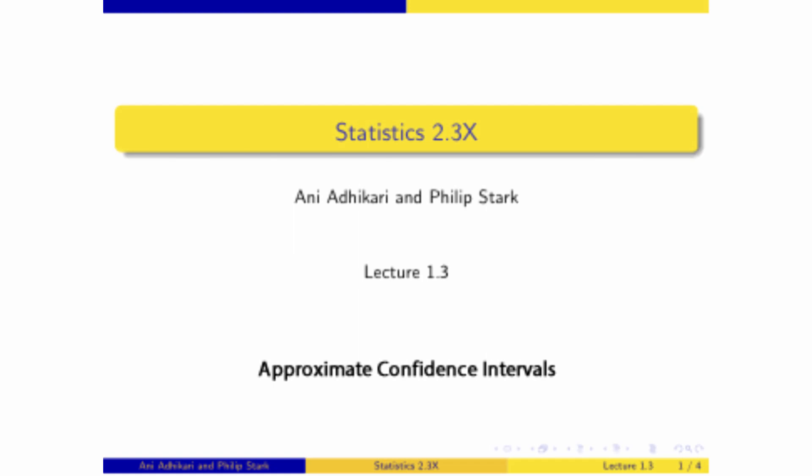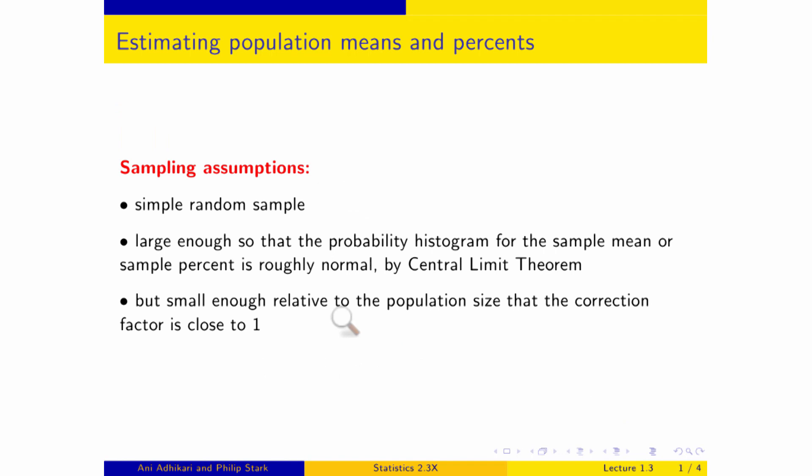Let's formalize this method of estimation, going over once again the sampling assumptions. We have a simple random sample which is big enough so that the central limit theorem applies — at a few hundred, perhaps — so that the probabilities for the sample mean or the sample percent are roughly normal. If you imagine all possible samples and plot all of their means, that histogram looks roughly normal if your sample is large, regardless of what the population looks like. But the sample is still small enough relative to the population that your correction factor is roughly one and you're not worrying about that in your standard errors.